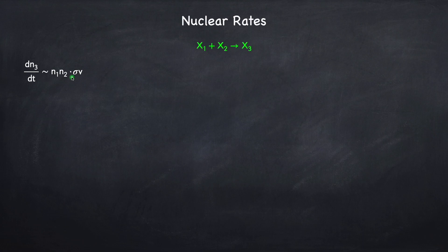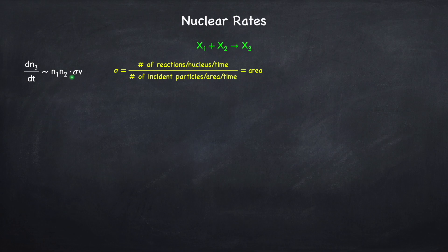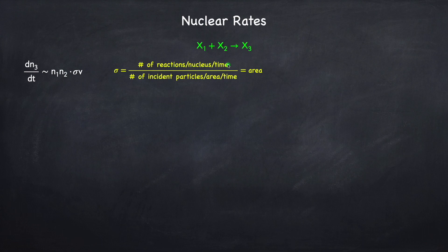Strictly speaking, the cross-section is the number of reactions per nucleus per time divided by the number of incident particles per area per time. One of these particle species is a target, and the other is an incident particle being shot at the target — it doesn't matter which you call which. Looking at the units: reactions per nucleus per time is dimensionless over time, and in the denominator, incident particles per area per time is dimensionless over area over time. The times cancel, leaving dimensions of area — so it's called a cross-section, but it is not a physical cross-section.